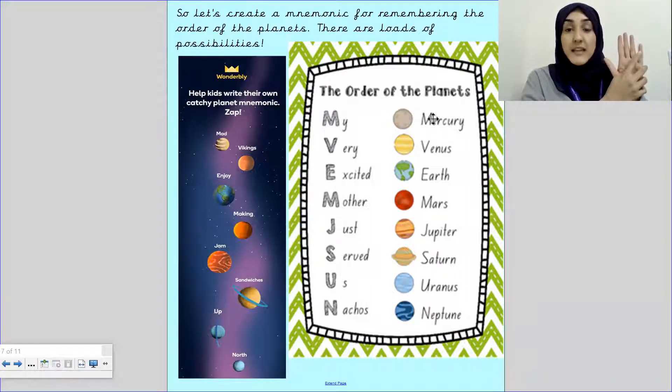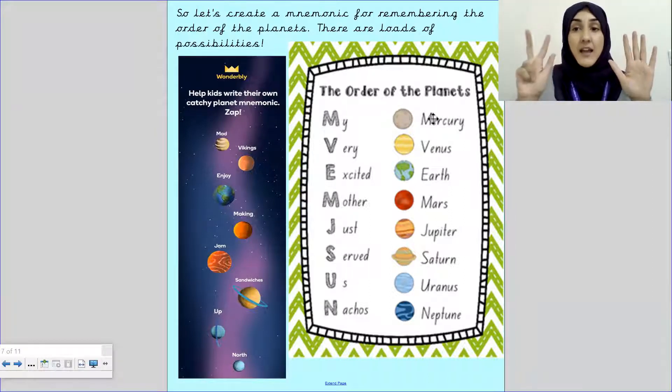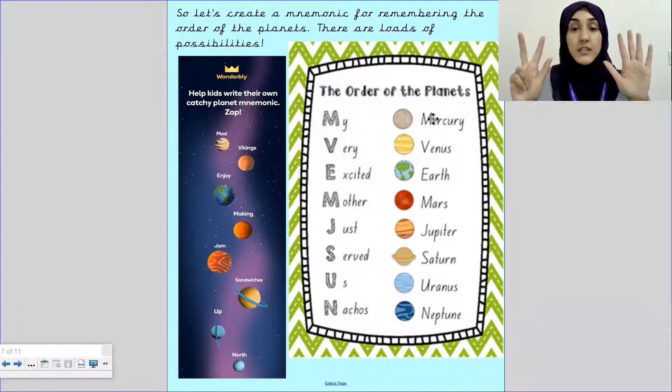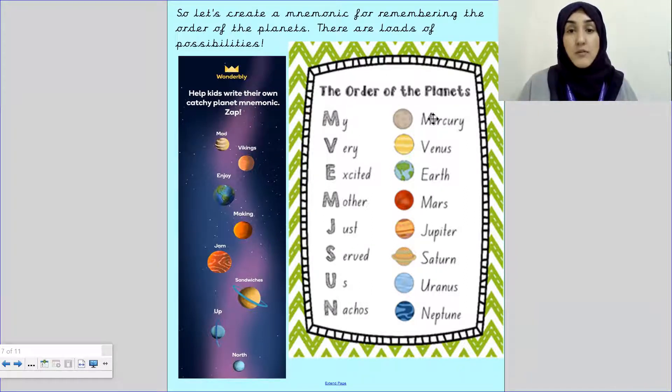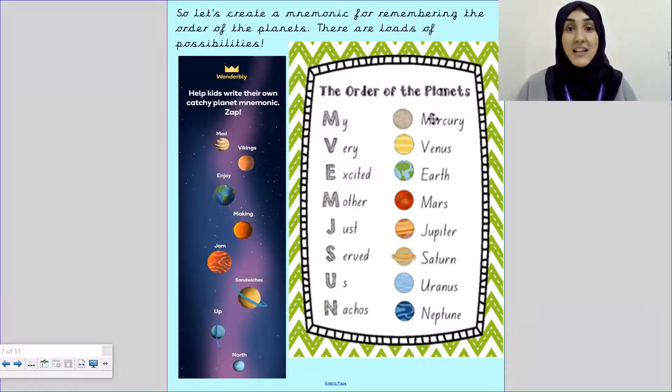Jupiter. Our sixth planet is Saturn. Saturn. Our seventh planet is Uranus. Uranus. And our eighth and final planet within our solar system is Neptune. Neptune. Now we need to remember it in this order. So Mercury, Venus, Earth, Mars, Jupiter, Saturn, Uranus, Neptune. So we need to remember it in that order.